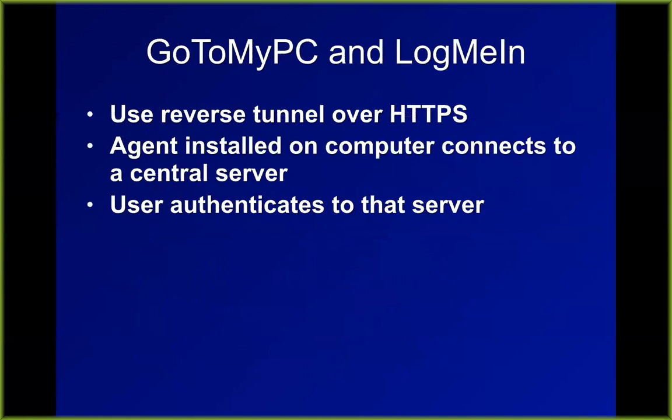There are third-party tools like GoToMyPC and LogMeIn. One advantage of these is you do not need to get permission to run a server at your company — they all send data to a company server so at both ends it appears to be outgoing internet data. You can block it with a layer seven firewall, and my college does. But if you have anything less than a layer seven firewall, it's not easy to block because it just looks like normal HTTPS traffic.